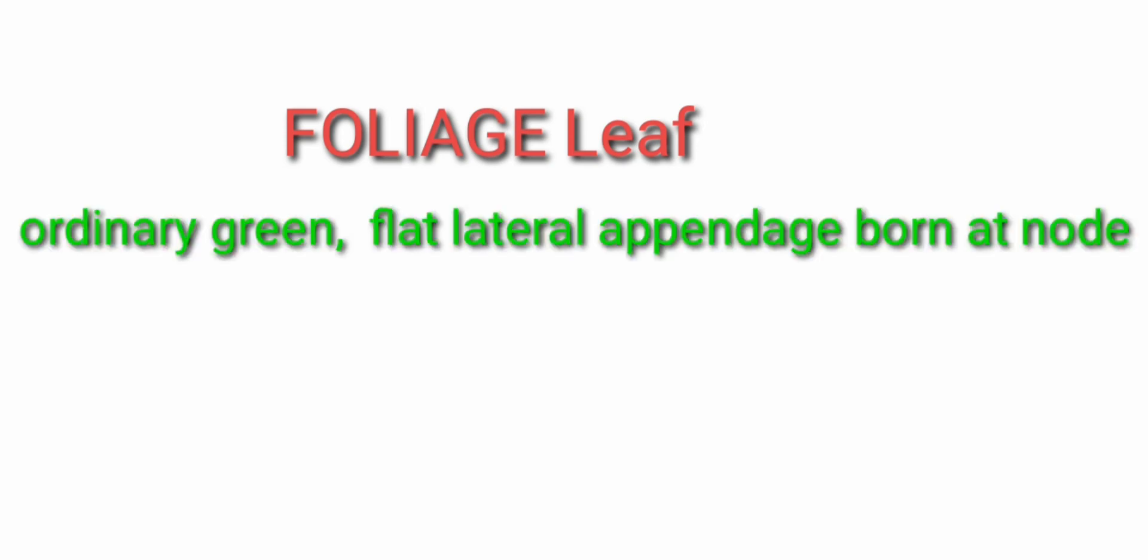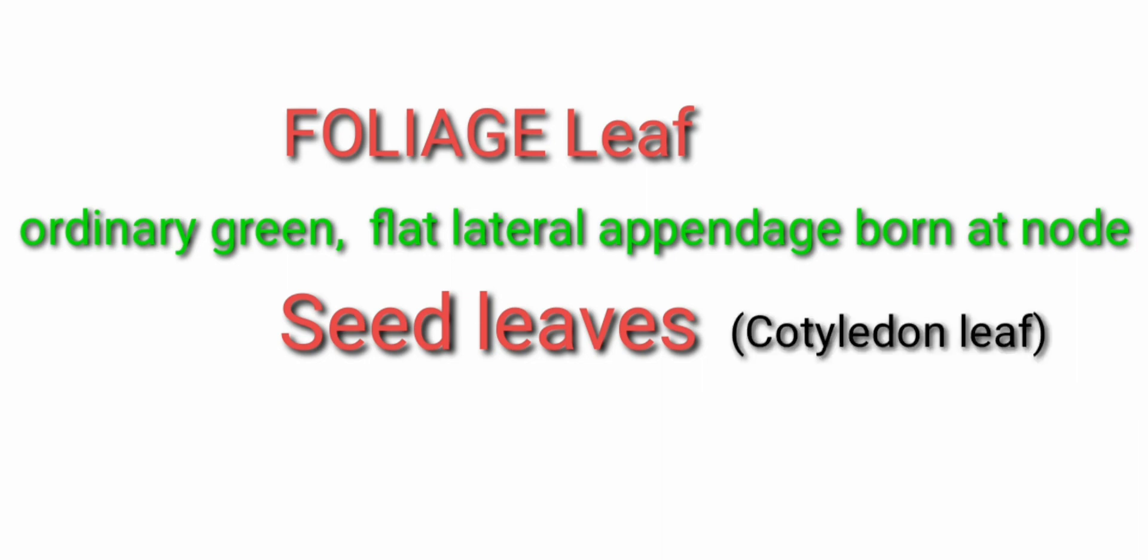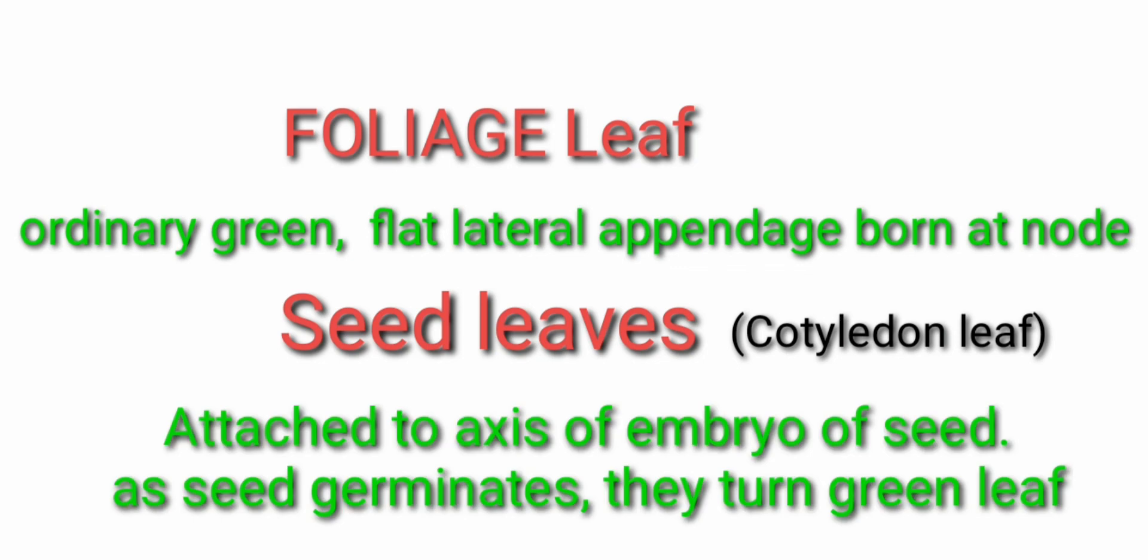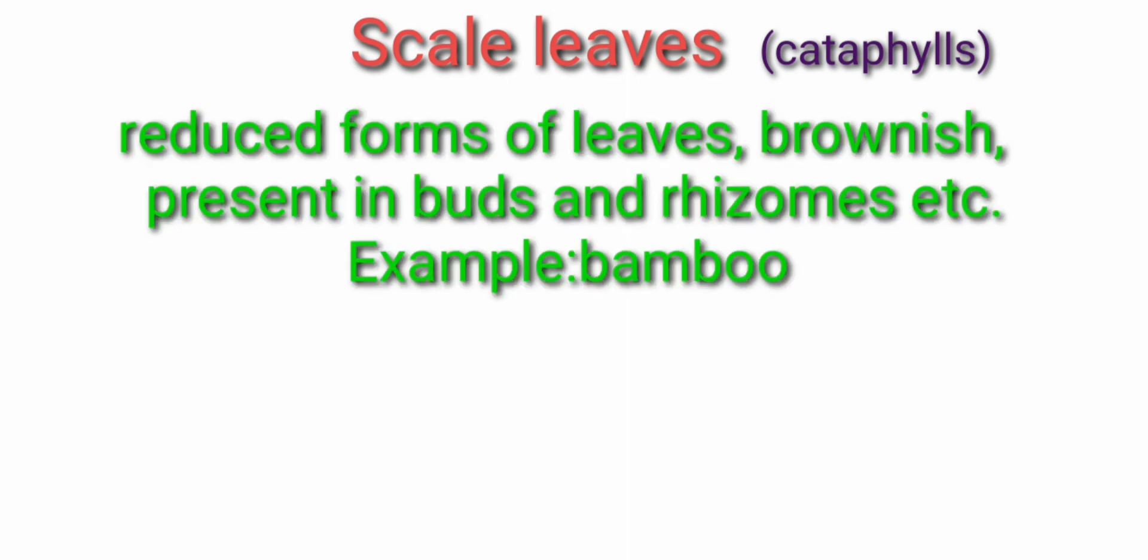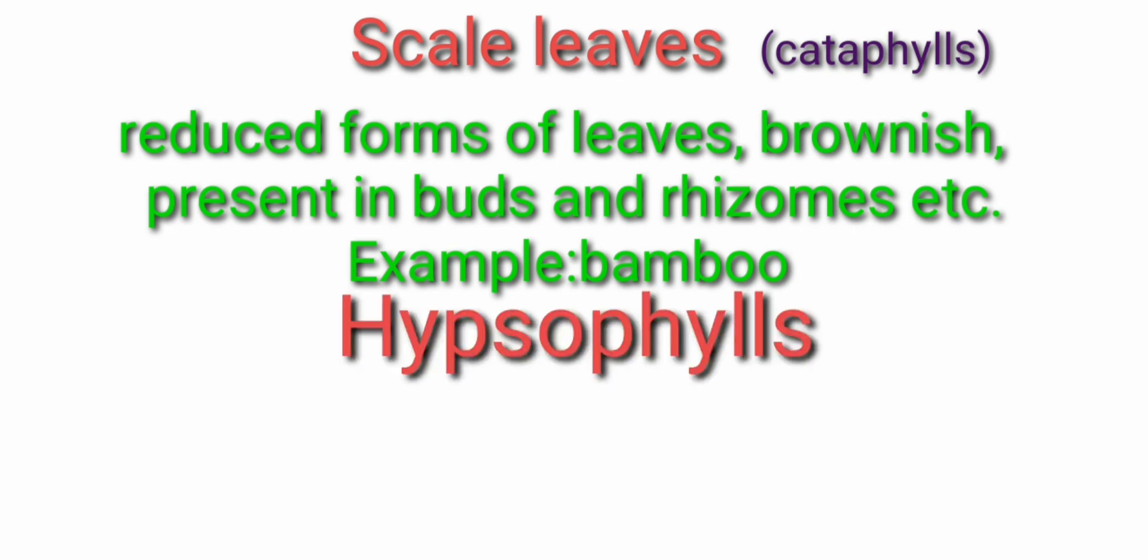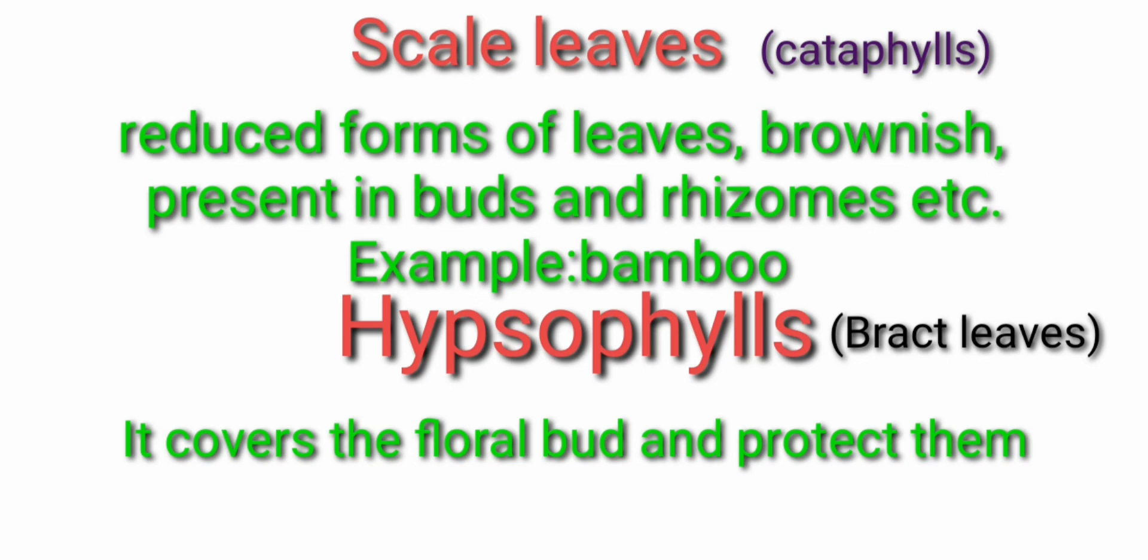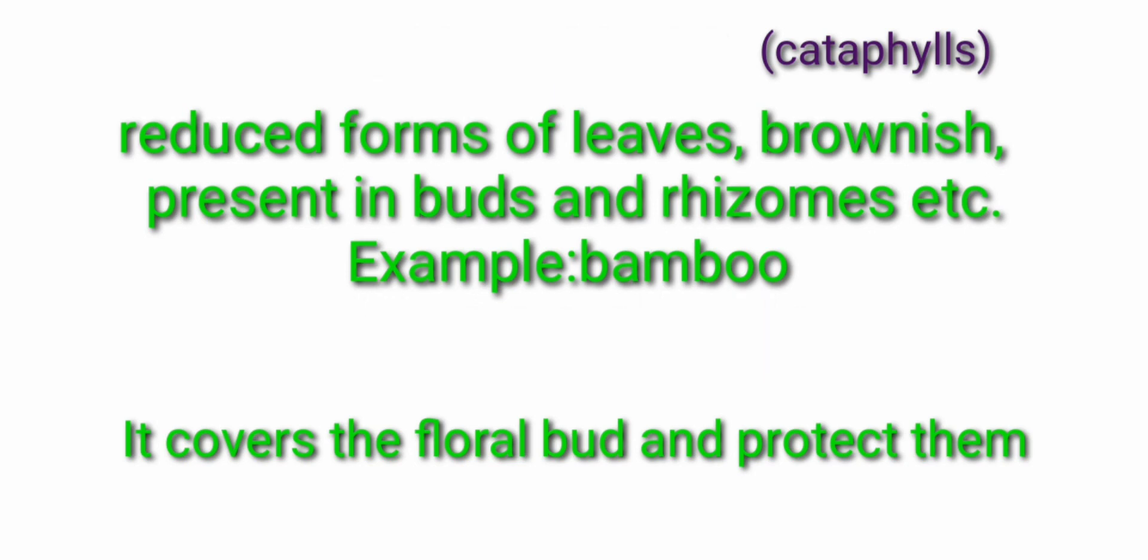Next, foliage leaves. Foliage leaves are the ordinary green leaf which has the green lateral appendages which are borne at the nodal region of stem. Seed leaves are also called as cotyledon leaves. These leaves are attached to the embryo. They turn green when the seed germinates. Next one is scale leaves or cataphylls are the leaves which are reduced and brown in color found in the buds and rhizome. Example: bamboo. Next one is hypsophylls or bract leaves. These bract leaves cover the floral bud and protect them. Next one is prophylls. These are the first forming leaves.